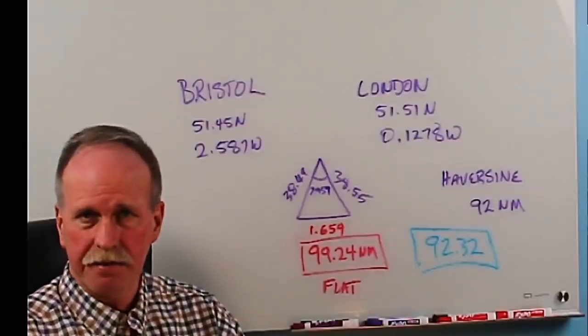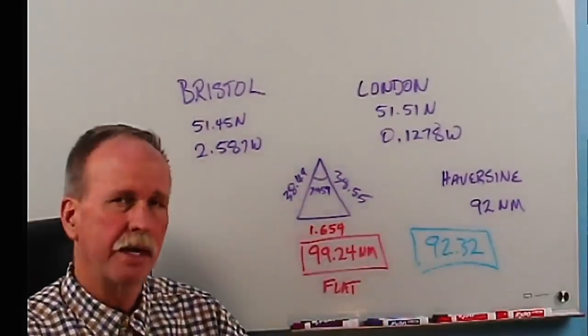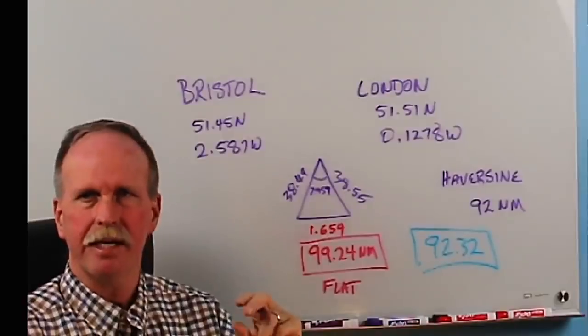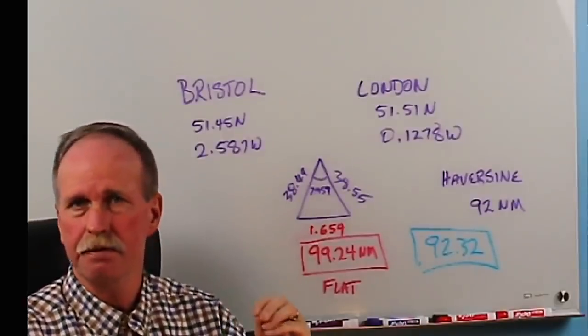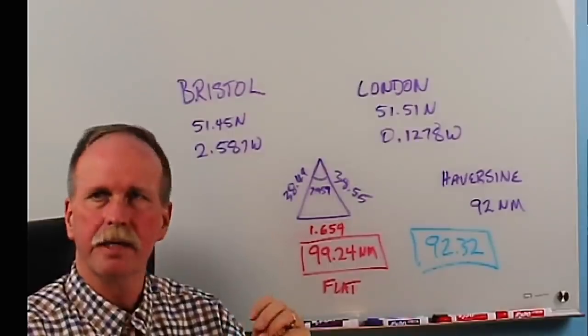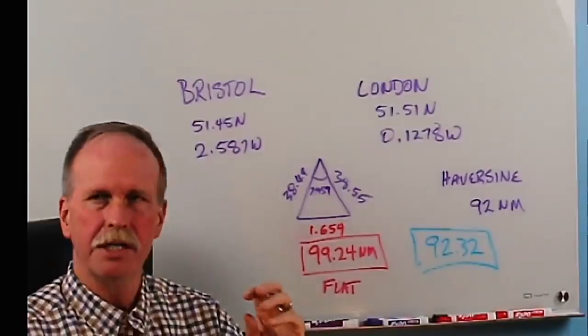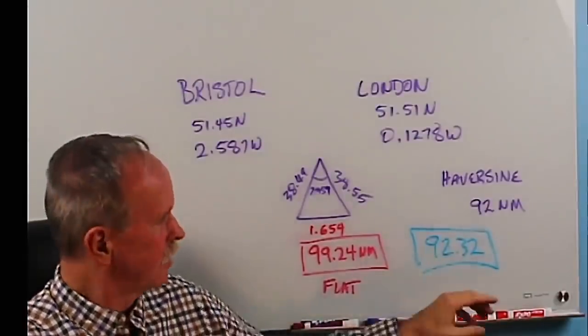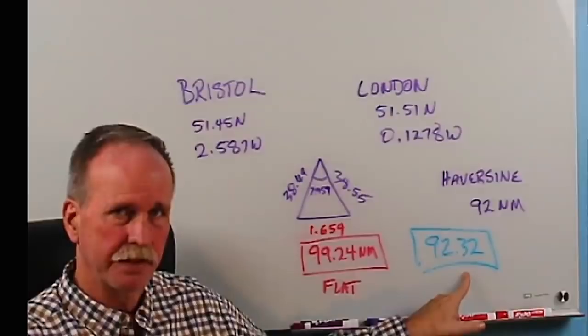But in the real world, there are confounding factors. Refraction, the oblate spheroid rather than a perfect spheroid. These change it just slightly and induce a slight amount of error by making assumptions that the earth is perfectly spherical or taking shortcuts such as the small angle approximation. It's close enough to be useful. It's close enough to give us an answer as to whether the earth is flat or spherical shaped.